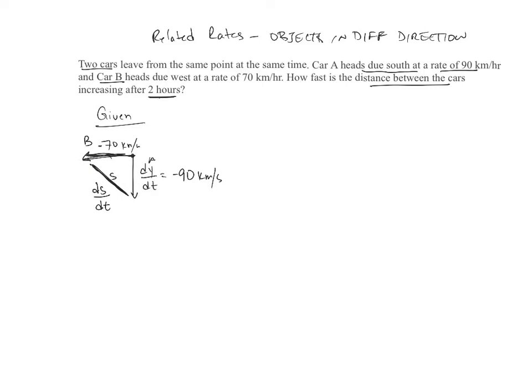So we need DS/DT. Well obviously, one is going south, one is going west. We've got Pythagorean theorem involved here. So we've got, this is my X, we'll say. So we have the formula that we're going to use, which will be X squared plus Y squared equals my S squared. Okay, so we've got that. So let's go ahead and take a look at what we have.